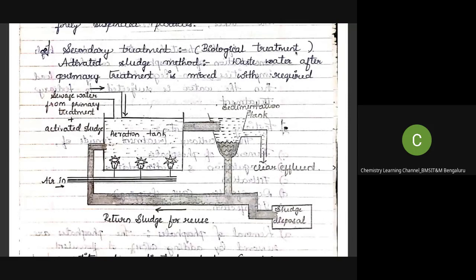Secondary treatment involves biological treatment. The organic matter coming from food, fecal matter of animals and humans is still not removed and must be addressed here. This is done through a process called the activated sludge method, which is very important for your final semester exam. You need to draw the diagram and explain the entire process.